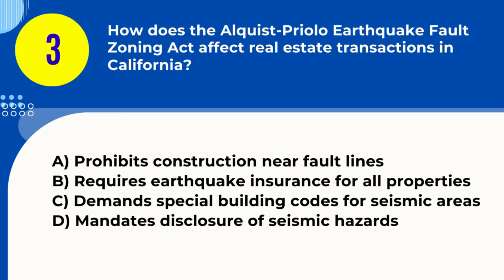Question 3. How does the Alquist-Priolo Earthquake Fault Zoning Act affect real estate transactions in California? A. Prohibits construction near fault lines B. Requires earthquake insurance for all properties C. Demands special building codes for seismic areas D. Mandates disclosure of seismic hazards. Answer: D. Mandates disclosure of seismic hazards. Explanation: The Alquist-Priolo Act requires that sellers and real estate agents disclose if properties are located within earthquake fault zones.